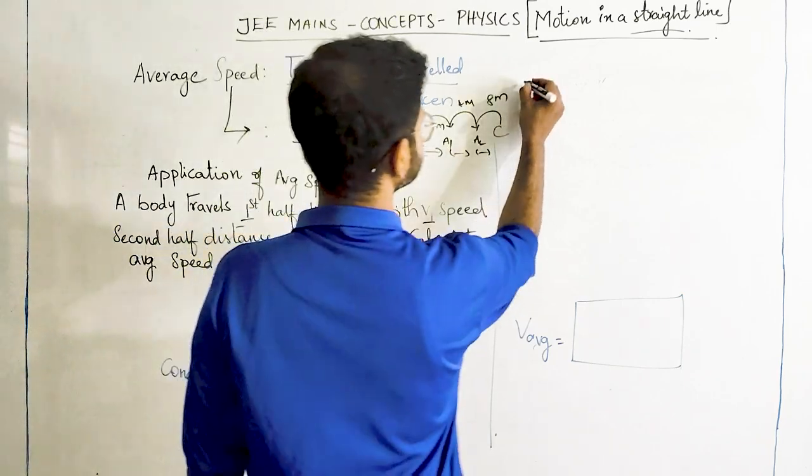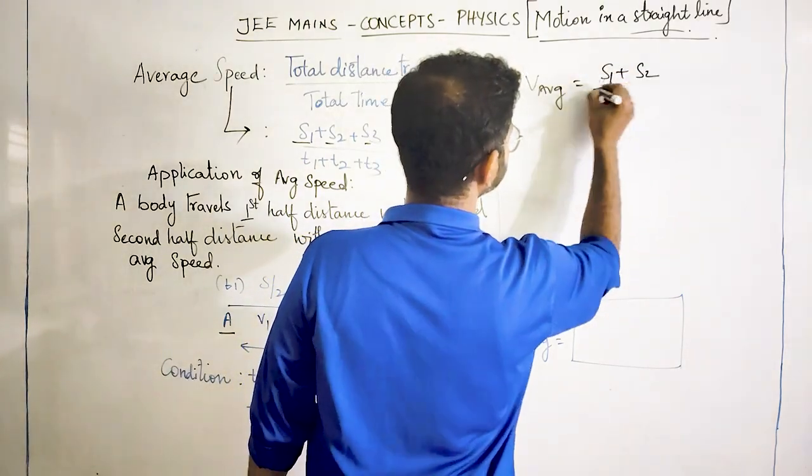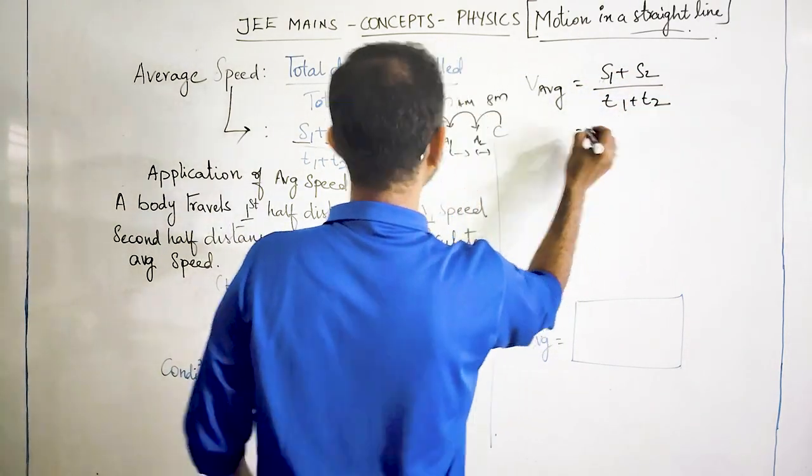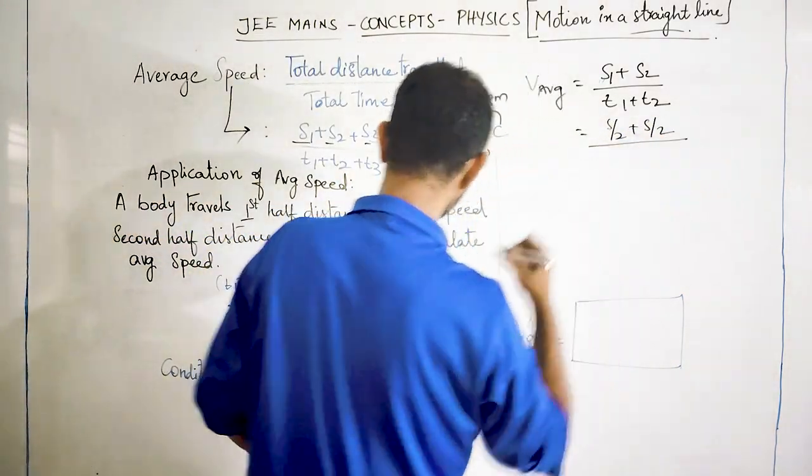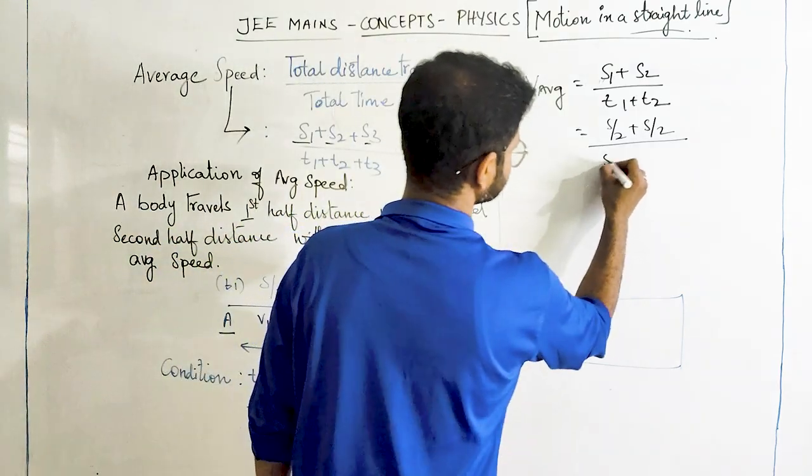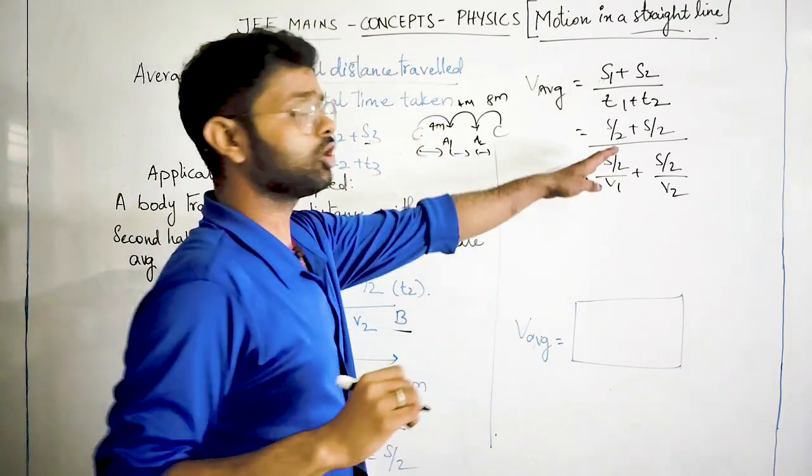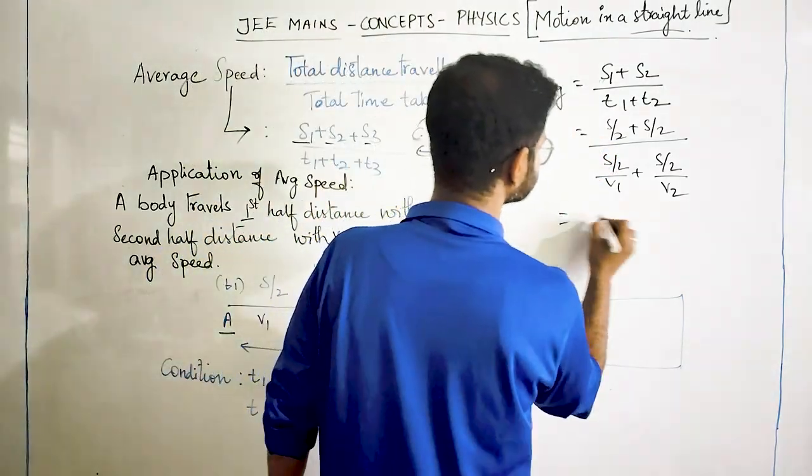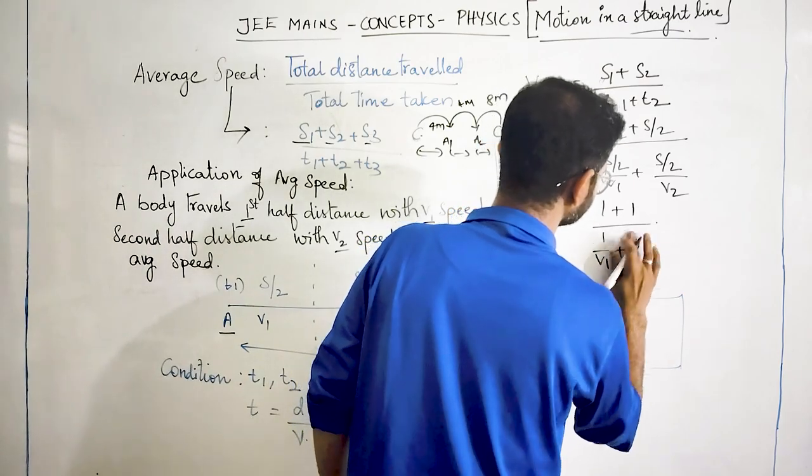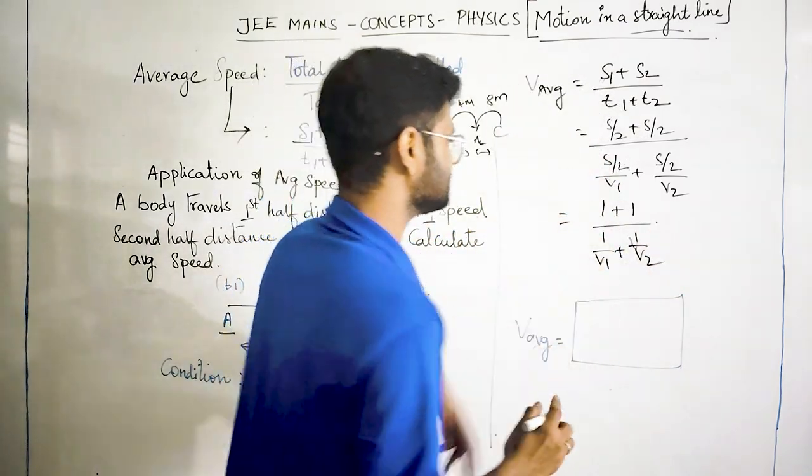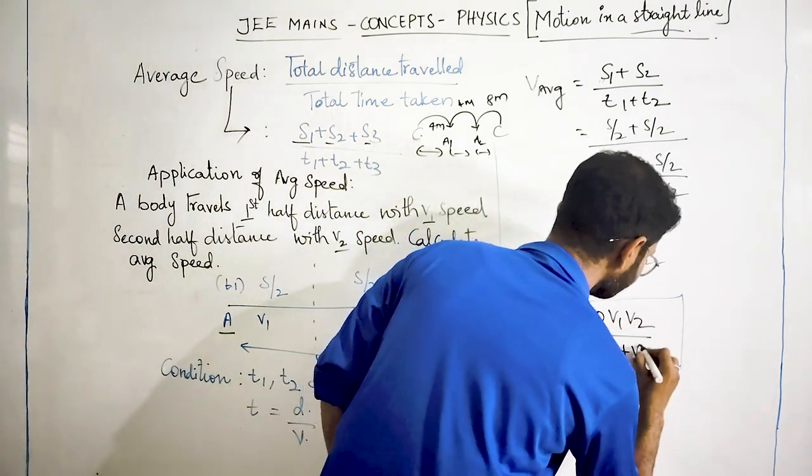V average becomes S divided by total time. So S by 2 plus S by 2 divided by T1 plus T2. What is your T1? S by 2 by V1 plus S by 2 by V2. Take out S by 2. So this gets cancelled. So 1 divided by 1 by V1 plus 1 by V2. So if you simplify this you will be getting 2V1V2 by V1 plus V2.